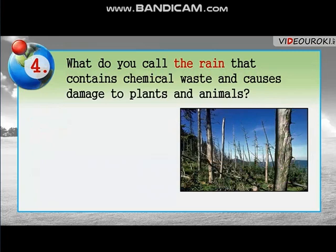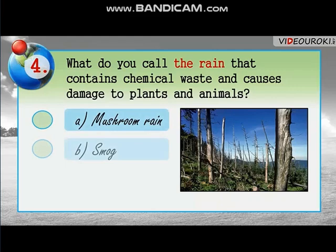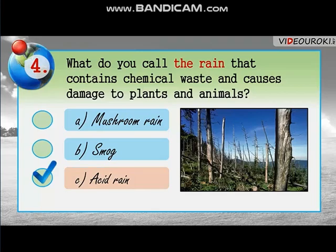Question number four: What do you call the rain that contains chemical waste and causes damage to plants and animals? A — mushroom rain. B — smog. C — acid rain. The correct answer is C — acid rain.